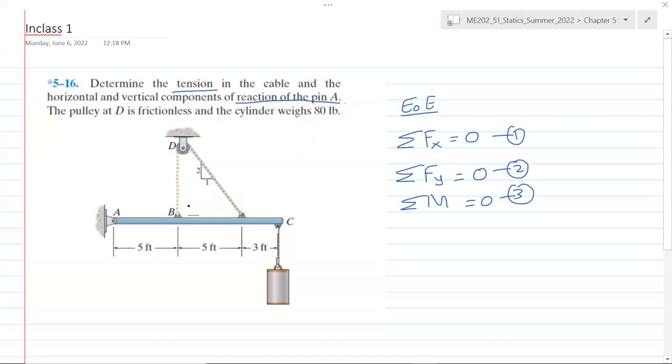This is a two-dimensional rigid body equilibrium problem. First step is we define our coordinate system: x-axis positive going right, y-axis positive going up, and any moment counterclockwise is positive. That means clockwise moment is negative.